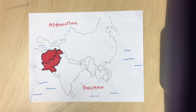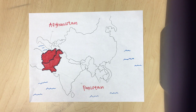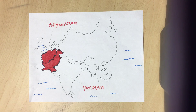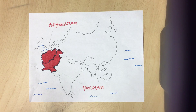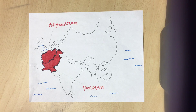Luckily, polio has been eradicated in most developed and developing countries, but as of 2015, 105 cases were reported worldwide. These cases originated in Madagascar, Myanmar, Nigeria, Ukraine, Afghanistan, Pakistan, the People's Republic of Laos, and several countries in West Africa. The only two countries still endemic for polio are Afghanistan and Pakistan, in which two new cases were reported in 2016. These countries face challenges such as insecurity, weak health systems, and poor sanitation.